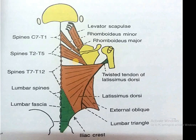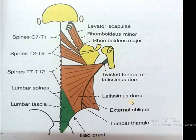Remember the actions: the trapezius performs shrugging; the levator scapulae performs elevation of the scapula; rhomboidus major and minor perform retraction of the scapula. The latissimus dorsi helps in all movements of the shoulder and is also known as the climbing muscle.